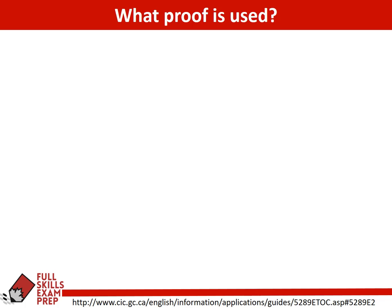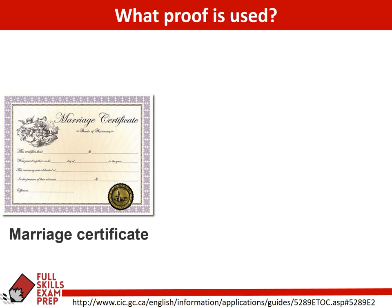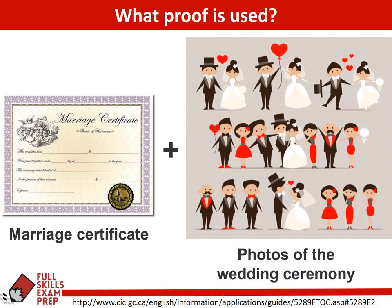In terms of your full skills exam — and in real life too — you have to think of the proof used. For marriage it's really straightforward: they have to prove a marriage certificate and photos of the wedding ceremony. If the wedding is here in Canada, that may not seem like much proof, but remember there are undertakings to really ensure honesty. If the marriage is in another country, they would have to prove the marriage certificate, the wedding ceremony, and that the marriage is legal in that other country.